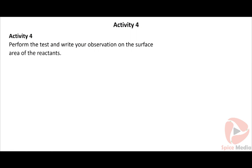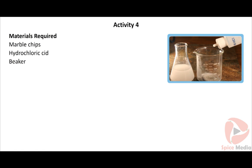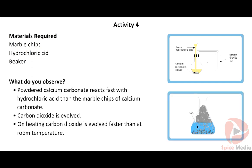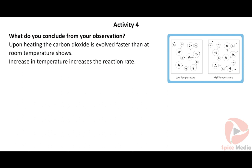Activity 4: Perform the test and write your observation on the temperature of the reaction. Materials required: marble chips, hydrochloric acid, and a beaker. Procedure: Take 3g of marble chips in a beaker, add 1ml of 1M hydrochloric acid, and observe the changes. Then heat the beaker and observe again. Calcium carbonate in the marble chips reacts with hydrochloric acid both at room temperature and on heating, and carbon dioxide is evolved. On heating, carbon dioxide is evolved faster. Conclusion: Increase in temperature increases the reaction rate.